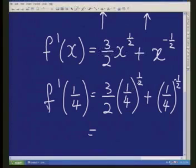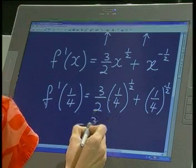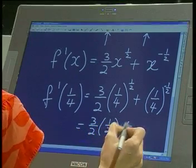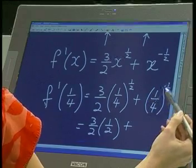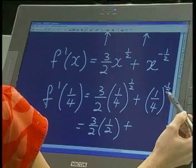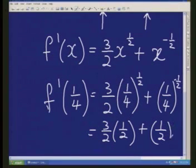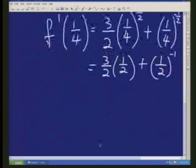What is a quarter to the half? A quarter to the half is the square root of a quarter, and the square root of a quarter is a half. Plus, a quarter to the half is also the square root of a quarter, which is a half. But we haven't yet raised it to the negative 1, so I must still keep my negative 1.